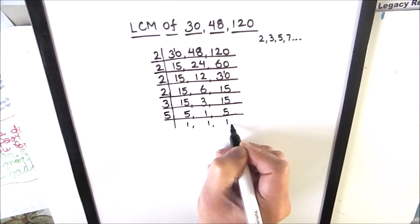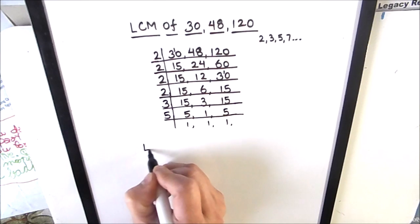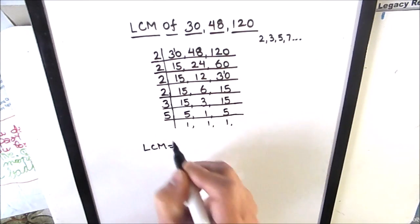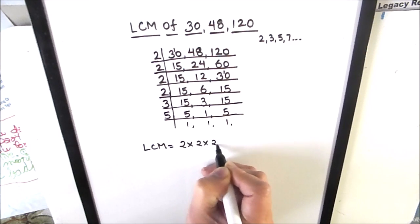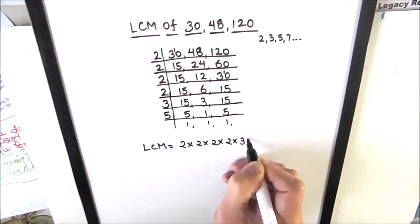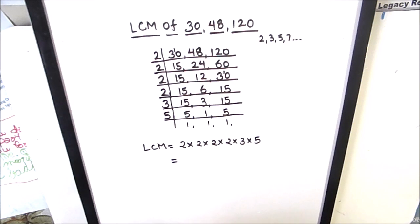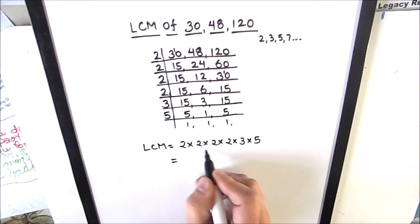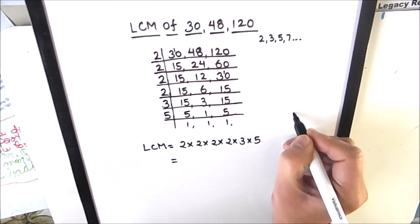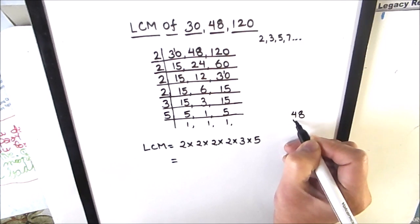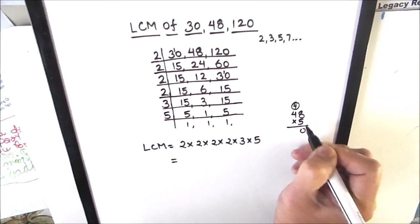To find the LCM we take the product of all the factors on the left-hand side of the ladder: 2 times 2 times 2 times 2 times 2 times 3 times 5. Calculating: 2 times 2 is 4, times 2 is 8, times 2 is 16, times 2 is 32 — wait — 2 times 2 is 4, 4 times 2 is 8, 8 times 2 is 16, 16 times 3 is 48, and 48 times 5 is 240.